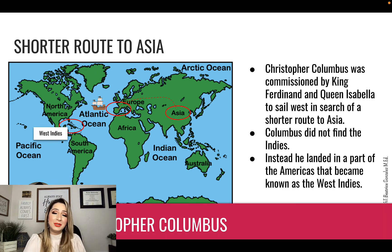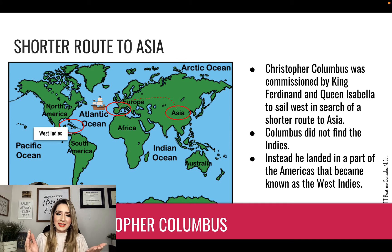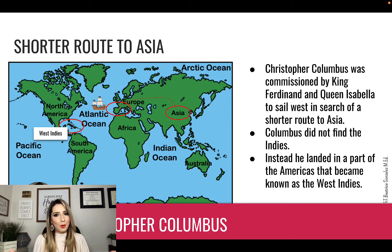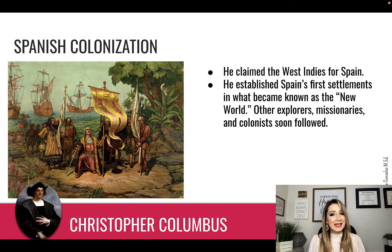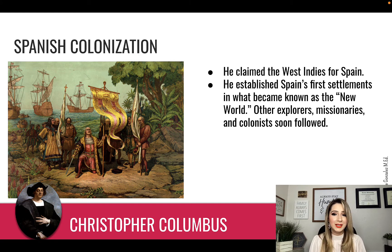Christopher Columbus was commissioned by King Ferdinand and Queen Isabella to find that shorter route to India. He had an idea of sailing west and ending up in the east since the world is round. Little did he know that he was going to discover two whole new continents, which are North and South America. He actually landed in what later became known as the West Indies because he thought he was in India, and hence why they call Native Americans Indians. He claimed the West Indies for Spain, established Spain's first settlements in what became known as the New World, and other explorers, missionaries, and colonists soon followed.